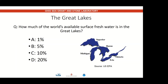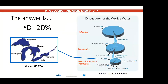Who can guess how much of the world's available surface fresh water is in the Great Lakes? The answer: 20%. Together, these lakes make up about 20% of the world's available surface fresh water, and Lake Erie alone provides drinking water for over 11 million people.